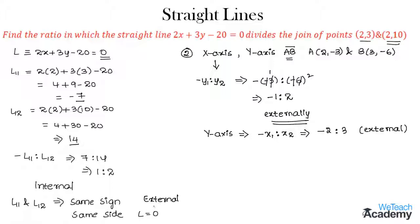Make a note of these formulas of minus x1 to x2 and minus y1 to y2 regarding the coordinate axes. This is how we find the ratio in which a straight line divides the line segment. Hope you understood the concept.